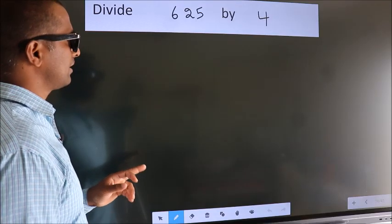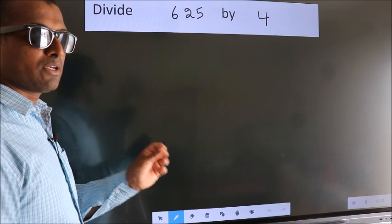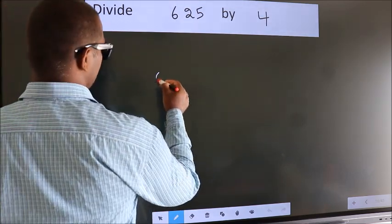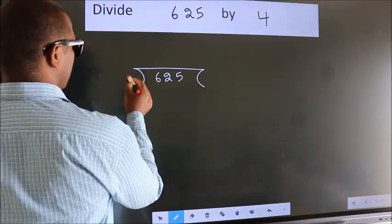Divide 625 by 4. To do this division, we should frame it in this way: 625 here, 4 here.